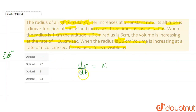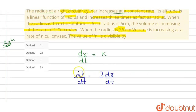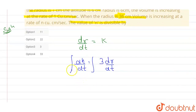In the question, dr/dt equals k — the radius of a right circular cylinder is increasing at a constant rate. Its altitude is a linear function of radius and increases three times as fast as the radius. So the rate of height or altitude is three times the radius rate, meaning dh/dt = 3·dr/dt. If I integrate both sides, this becomes h equals 3r plus c.